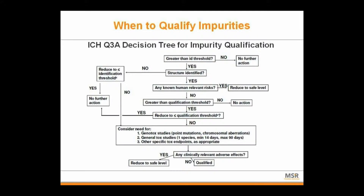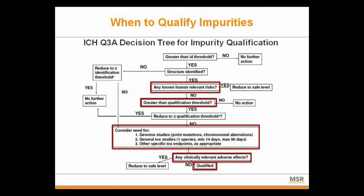Here's a decision tree from Q3A for impurity qualification, and I know we've all seen this or a form of this pathway. The highlights here are the areas where the toxicologist would need to do some sort of risk assessment or safety evaluation. It's quite important that the toxicologist is involved with regard to qualification. If a particular impurity hits your ID threshold — and that threshold changes depending on where you are in development — once the structure has been identified, it's really up to the toxicologist to determine whether there are any human risks from that structure.